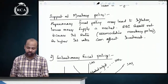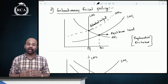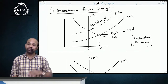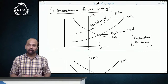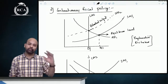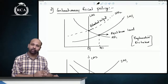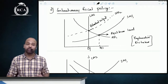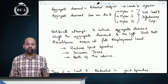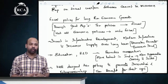In contractionary fiscal policy, aggregate demand is more than what the economy can supply. In the short run, the economy cannot increase output, so the supply curve shifts upward — the same output is supplied at a higher price. The government intervenes by reducing aggregate demand to the left, so equilibrium occurs at the natural level without price increases. This is achieved by reducing government spending, increasing taxes, or combining both.